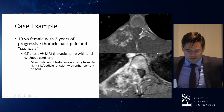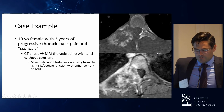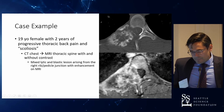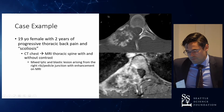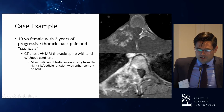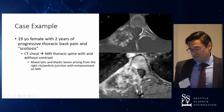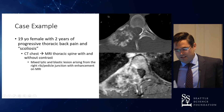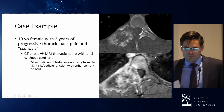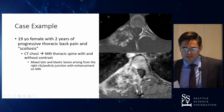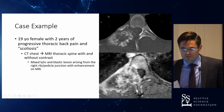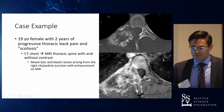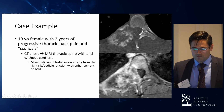You see this mixed lytic and blastic lesion arising from the rib-pedicle junction with enhancement on MRI. For the most part when you're thinking about something that looks like a tumor in the spine, you're thinking about metastatic disease. But there are certainly a host of primary tumors that can affect the bone and the spine. Especially in a young patient with imaging findings like this, you're thinking more of a primary bone tumor.